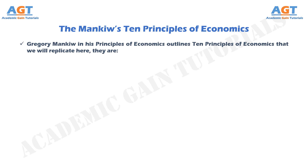Principle No. 1: People face trade-offs. The first lesson about making decisions is summarized in the adage, there is no such thing as a free lunch. To get one thing that we like, we usually have to give up another thing that we like. Making decisions requires trading off one goal against another. Acknowledging life's trade-offs is important because people are likely to make good decisions only if they understand the options that they have available.